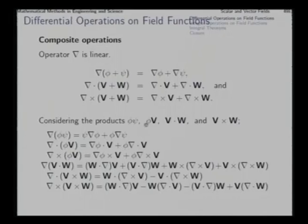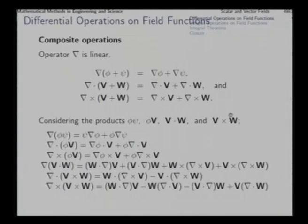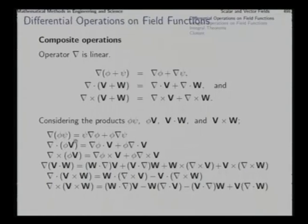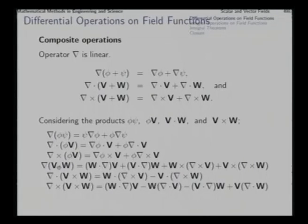Four cases may arise: the product of two scalar fields is again a scalar field; the product of a scalar field and a vector field is a vector field; and the product of two vector fields can be in two ways — one is the dot product, which is a scalar, and the other is the cross product, which is a vector. When we apply the del operator on these four composite functions, the gradient of phi times psi, the divergence of phi times v turns out to be gradient of phi dot v plus phi times divergence of v, and the curl of phi v turns out to be gradient of phi cross v plus phi times curl of v. These expressions you can work out by expanding term by term and then simplifying.